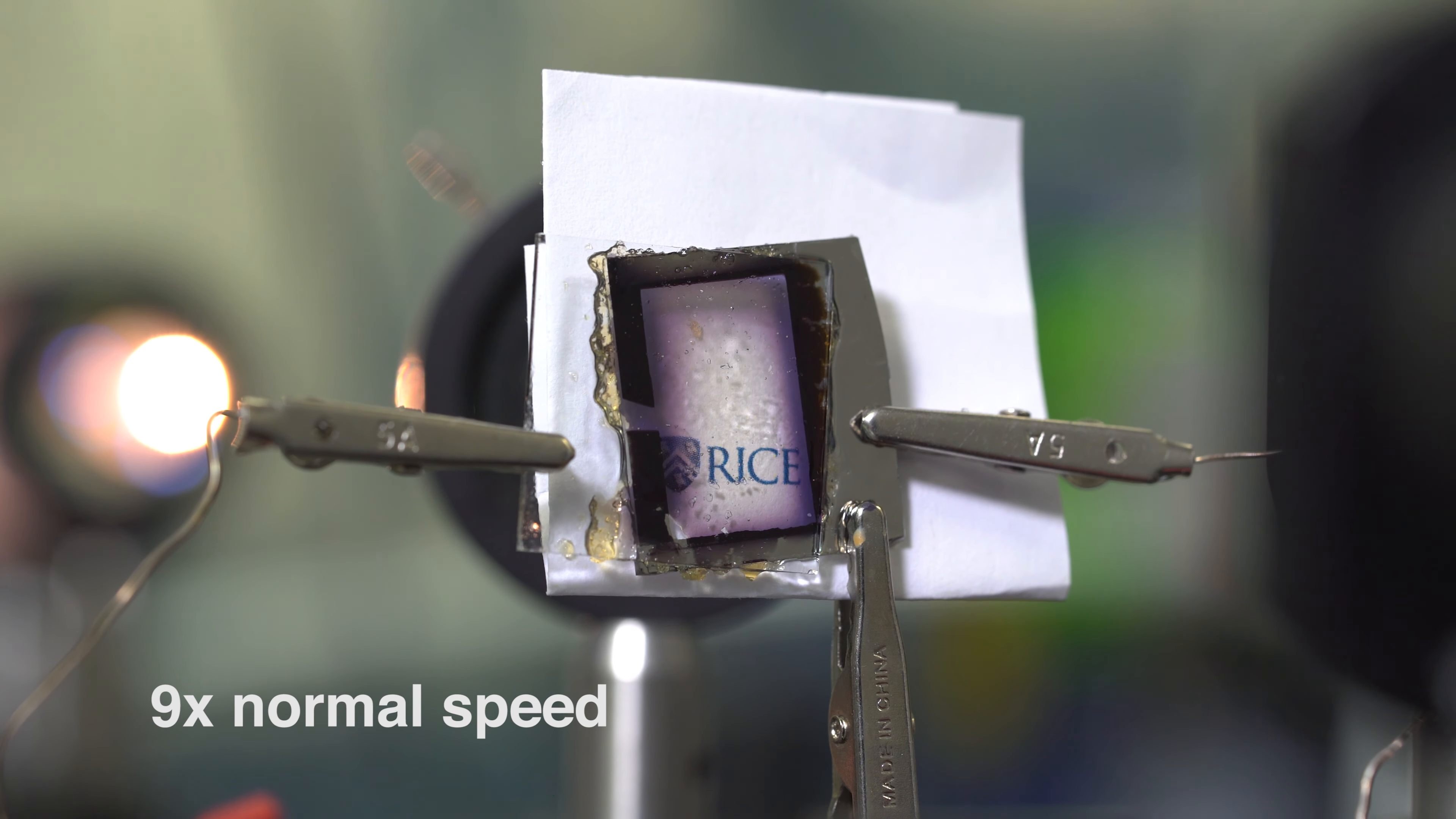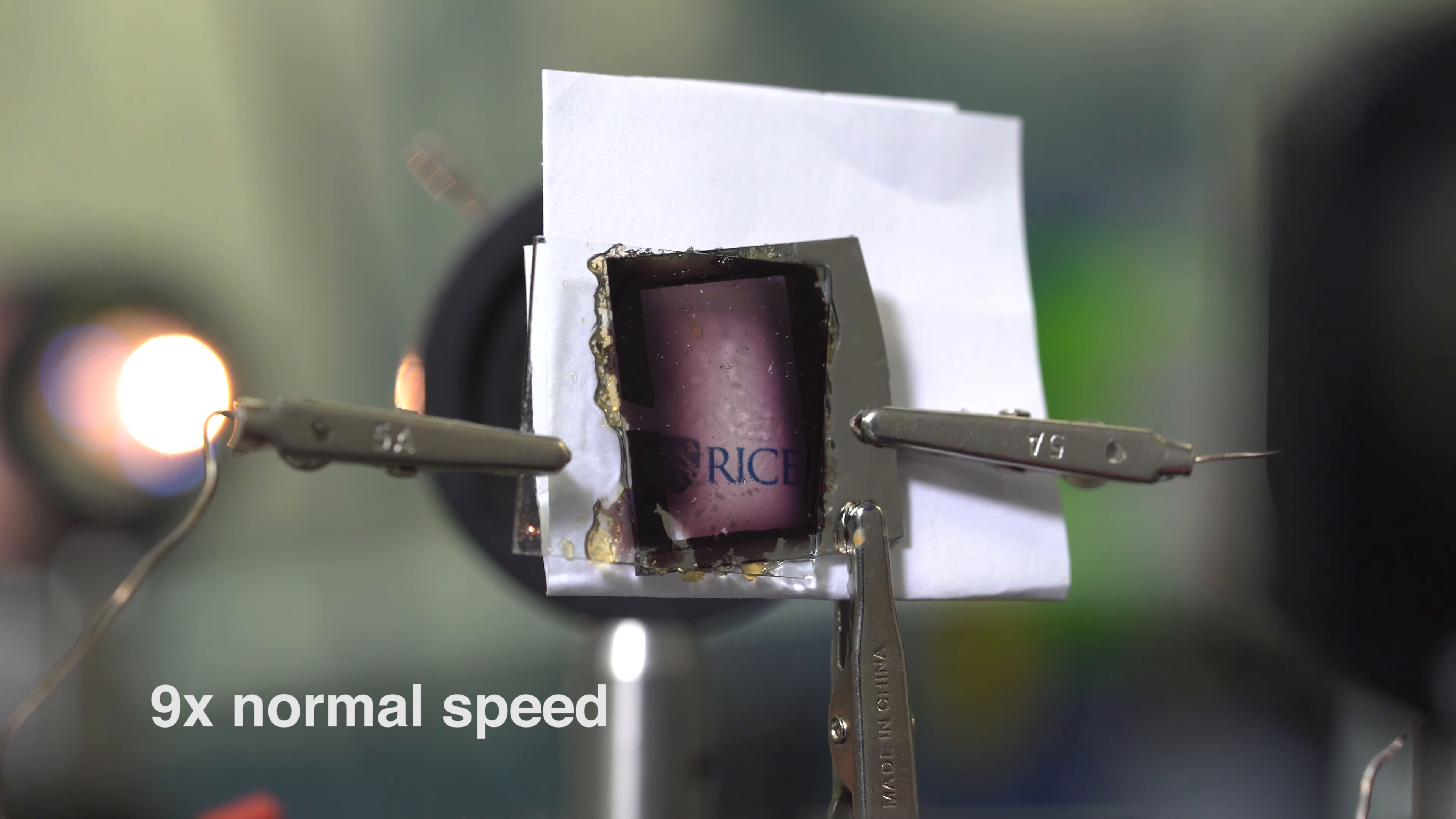We sandwich that between glass and we're actually able to make something that looks like a window. But the window changes different types of colors depending on how we apply really very low voltage.